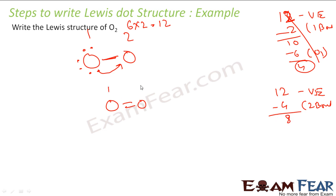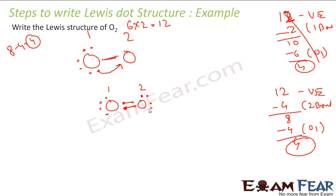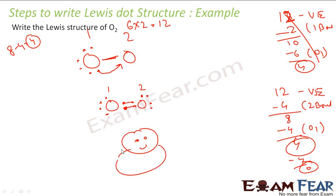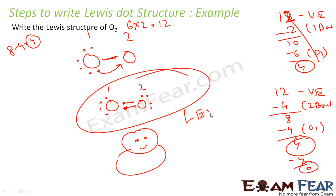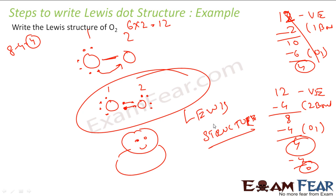Let us see. Oxygen 1 has 4 electrons — 1, 2, 3, 4 — and it needs 4 more. So we give 4 electrons to oxygen 1. We are left with 4 electrons and oxygen 1 is happy. Oxygen 2 also has 4 electrons and needs 8 minus 4, that is 4 electrons, and we have exactly 4 electrons. So we give those 4 electrons to oxygen 2 — this oxygen is also happy. We are left with 0 valence electrons and both oxygen 1 and oxygen 2 are happy. Since both are happy, this is my Lewis structure, because Lewis structure says that all atoms in the molecule have to be happy — all atoms in the molecule have to be stable to give a proper Lewis structure.